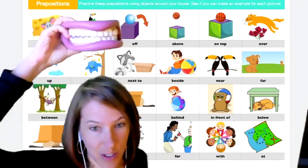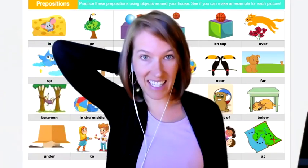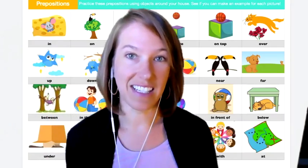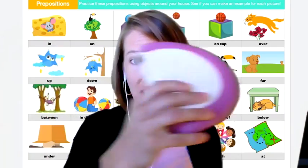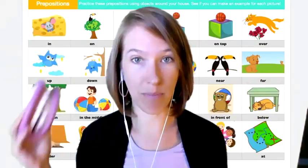We could also put the mouth behind me. That's back here, right? So those are some ideas of prepositions that show where something is in relation to my body.